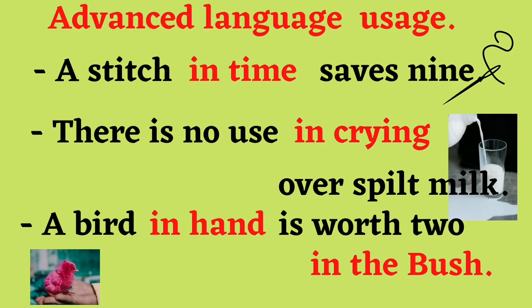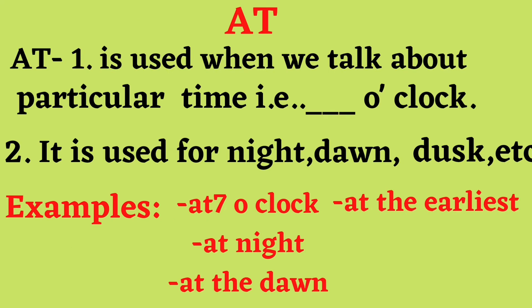AT is used when we talk about a particular time — for example, seven o'clock, eight o'clock. AT is also used for night, dawn, dusk, etc. — at night, at the dawn, at the dusk, at the earliest.